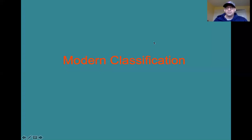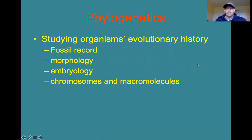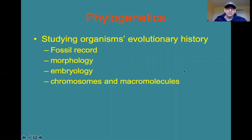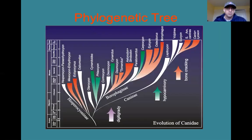When we talk about modern classification, we're going to be taking a look at phylogenetics — studying organisms' evolutionary history. We're going to look at the fossil record, their morphology, their embryology, their chromosomes, the sequence of their DNA nucleotides, their macromolecules, and the amino acid sequences of their proteins. We're going to study their RNA and compare all of those to figure out an organism's evolutionary history. Interestingly, these are the same things we would look at as evidence for evolution — so when we study organisms' evolutionary history, we study the evidence that supports evolution.